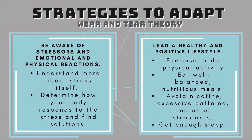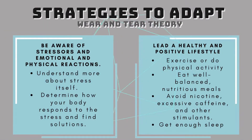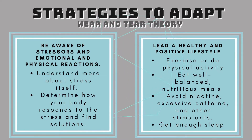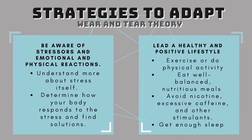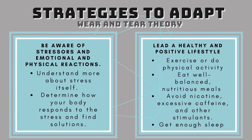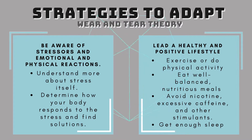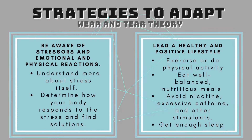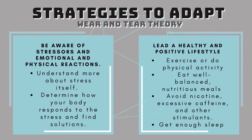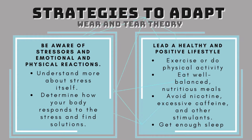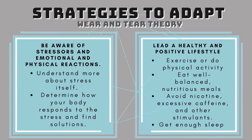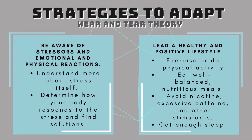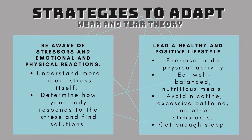As effects of aging caused by progressive damage to cells and body systems are not easily treated, certain strategies are the best way to help the elderly age healthily. The first strategy is to be aware of stresses and the emotional or physical reactions of the body by understanding more about stress and finding solutions. The other strategy is to lead a healthy and positive lifestyle by doing exercises, eating well-balanced nutritious meals, avoiding nicotine, excessive caffeine and other stimulants, and getting enough sleep.